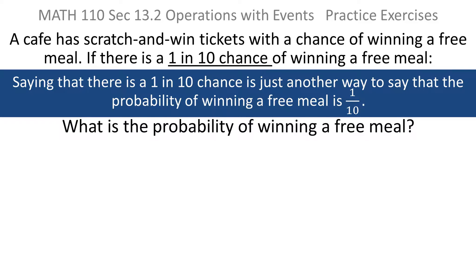I hope you'll notice that this problem is about as easy as they come, because saying that there's a 1 in 10 chance of something just means that the probability is 1 tenth of that thing happening. So, the probability of winning a free meal is 1 tenth.